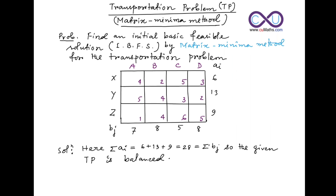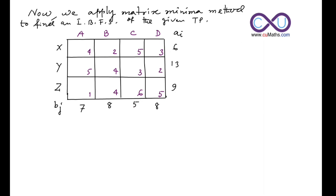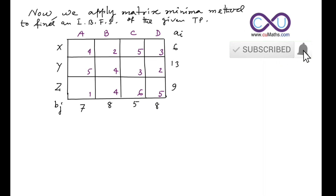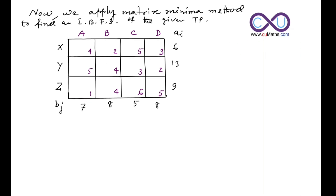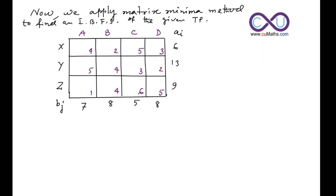In this method, you have to find the smallest cost element among all the cells: 4, 2, 5, 3, 5, 4, 3, 2, 1, 4, 6, 5. Among all of them, one is the minimum element. If the minimum element occurs more than once, you can take any one arbitrarily. Here, one is unique.